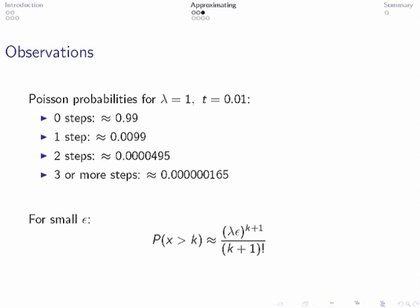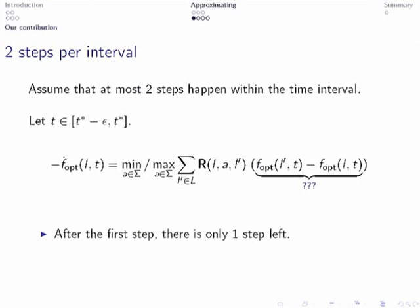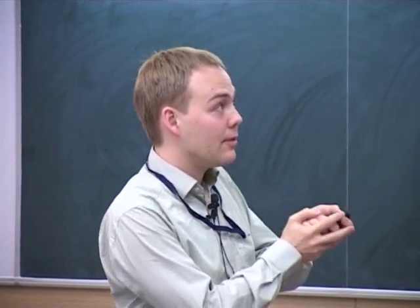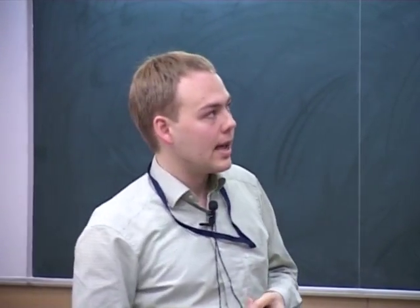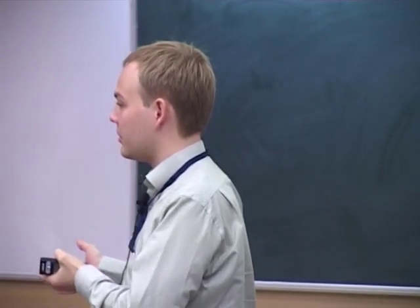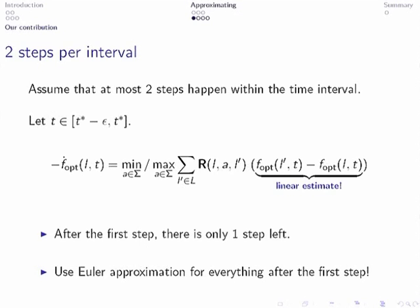For example, one could allow two steps per interval. Let's consider what happens if we allow for two steps to happen in an interval. We have these equations again. And we want to approximate for the case that two or less steps may happen. That is, if one step happens, we end up in one of the successor states. And so we need an estimate for the successor states that considers the case that another step may happen. But we have computed this already. That was the Euler approximation. So we just make one pass of the state space, compute the Euler approximations, and then we make a second pass, like here, and replace the reachability probabilities by the linear estimations we got from the Euler approximation.